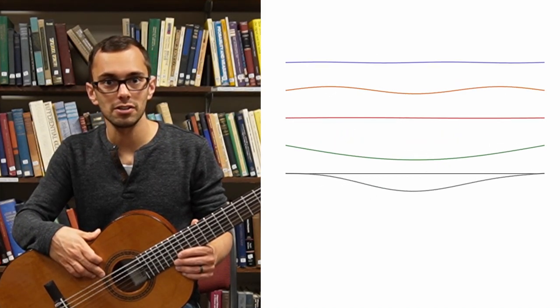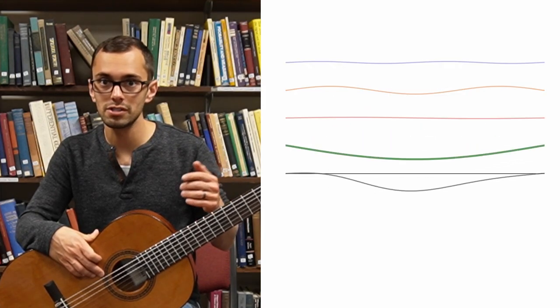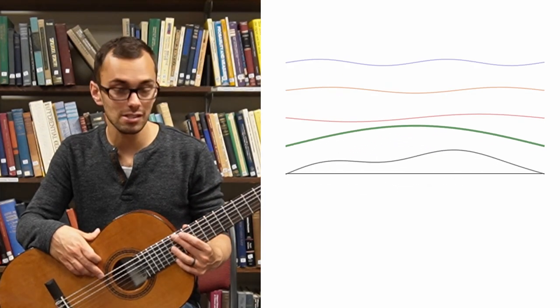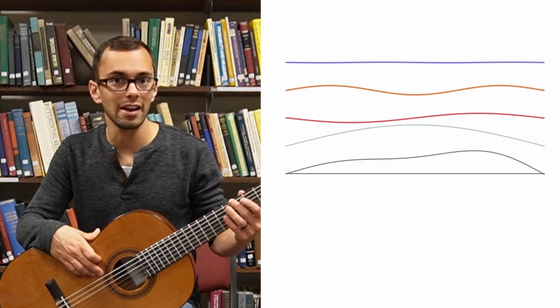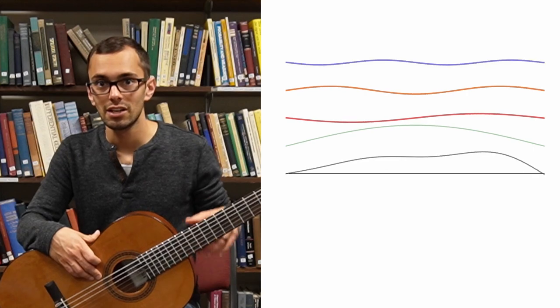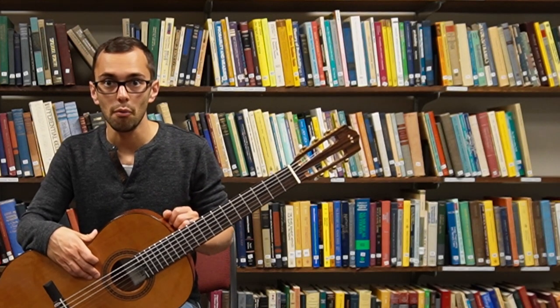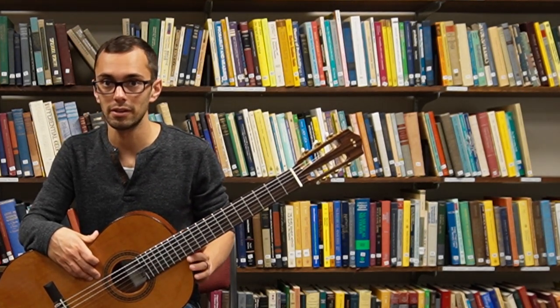When we play a guitar string, the note we are hearing corresponds to the lowest frequency, which is known as the dominant tone. The higher frequencies are known as overtones, and they add color and texture to the sound. As such, in order to understand the sound that a plucked string makes, we really need to find the eigenvalues of the corresponding Laplace operator.